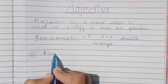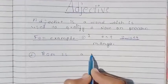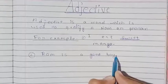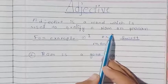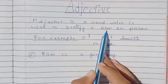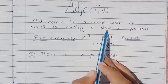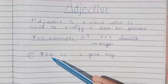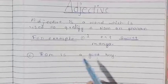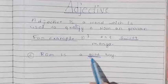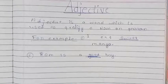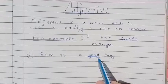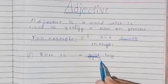Let's take a second example: Ram is a good boy. Here, दोस्तों, आप लोग जानते होंगे noun वह शब्द होता है — किसी प्राणी का नाम, किसी वस्तु का नाम, या किसी चीज का नाम, उसे हम noun कहते हैं। यहाँ पर राम किसी इंसान का नाम है, तो राम noun है। और इसकी quality को यहाँ पर 'good' दर्शा रहा है। राम एक अच्छा लड़का है। तो यहाँ पर 'good' adjective है।